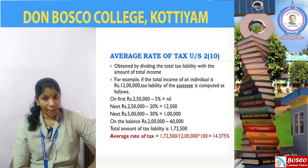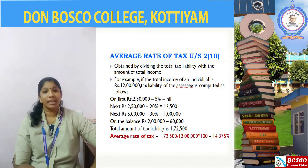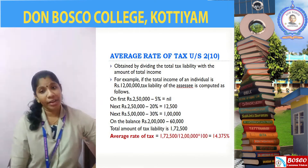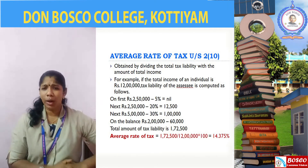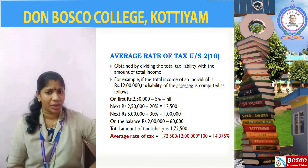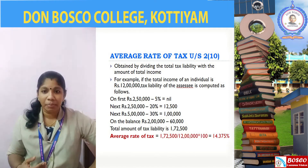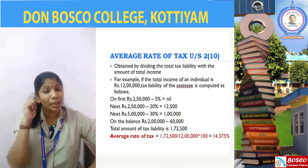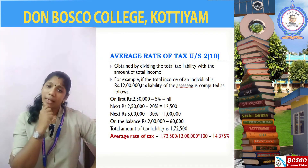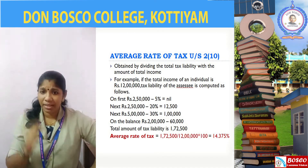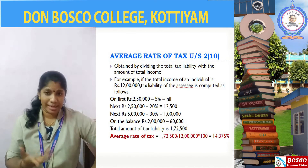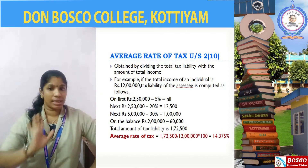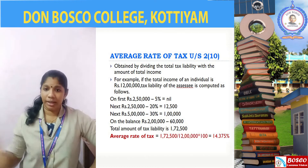So 14.375% is the average rate of tax applicable to an individual having a total income of 12 lakh. What is the purpose of computing average rate of tax? The answer is that even though different slabs have different rates — 5%, 20%, 30% — the average rate gives us the effective overall rate applicable to the taxpayer.